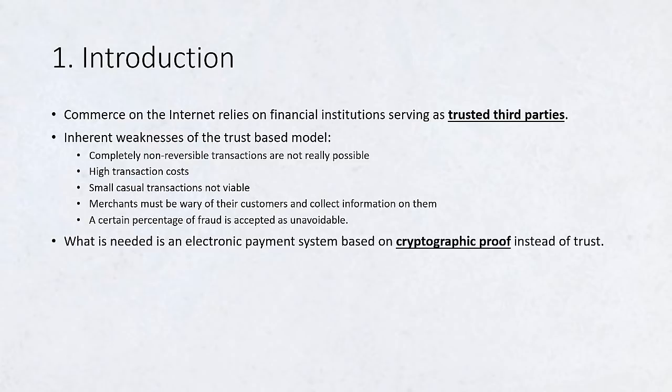What is needed is an electronic payment system based on cryptographic proof instead of trust, allowing any two willing parties to transact directly with each other without the need for a trusted third party. Transactions that are computationally impractical to reverse would protect sellers from fraud, and routine escrow mechanisms could easily be implemented to protect buyers.